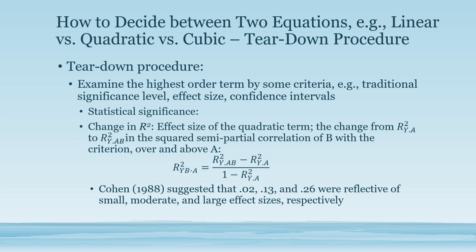Secondly, we can also use a tear-down procedure. We first examine the highest order term by some criteria. This criteria includes traditional significance level, effect size, or confidence intervals. Using the traditional significance level, we usually use p of 0.05. When the highest power term is significant at 0.05, we keep the highest order formula.